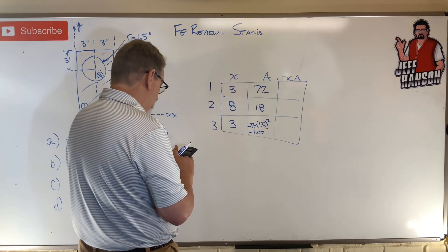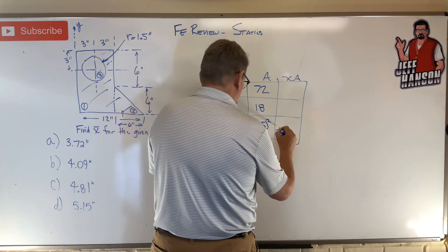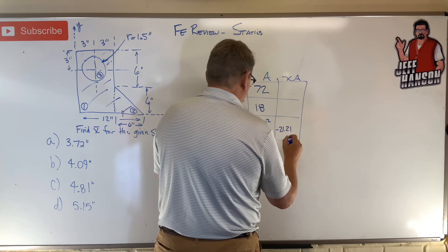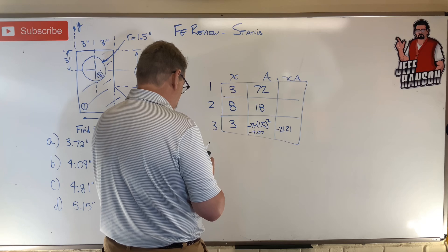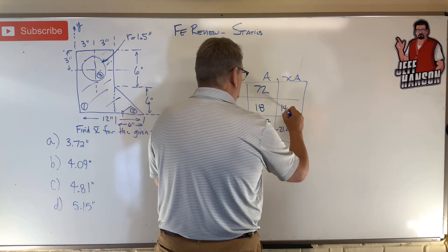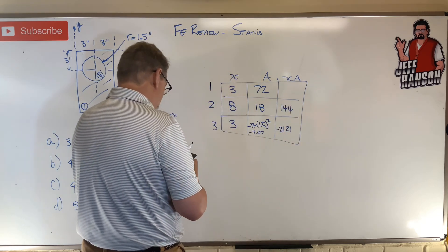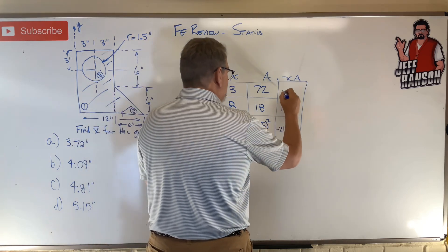Times 3 is negative 21.21. And then 8 times 18 is 144. And 3 times 72 is 216.